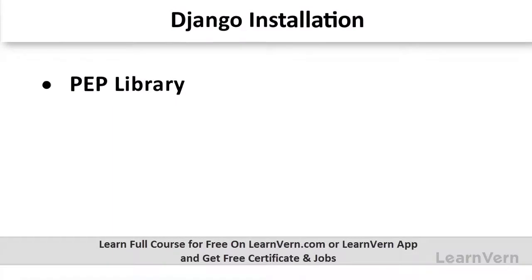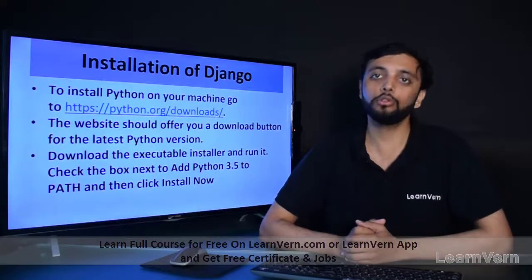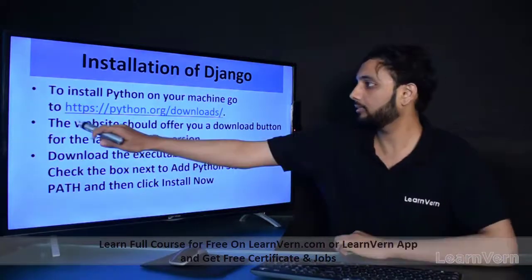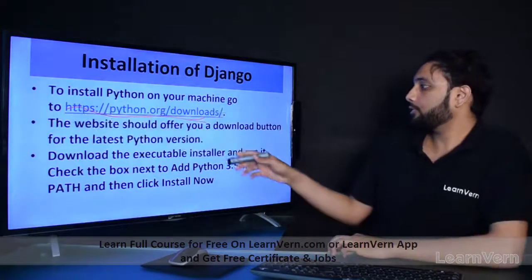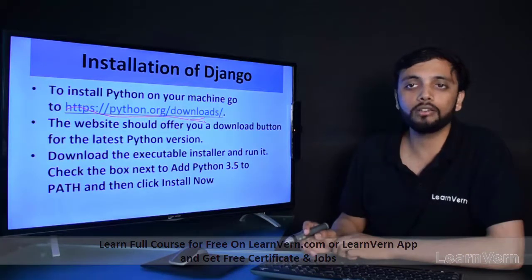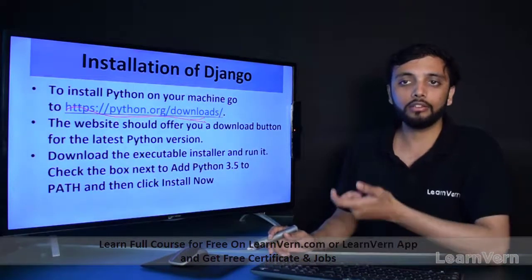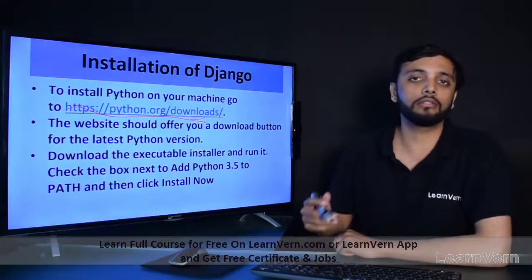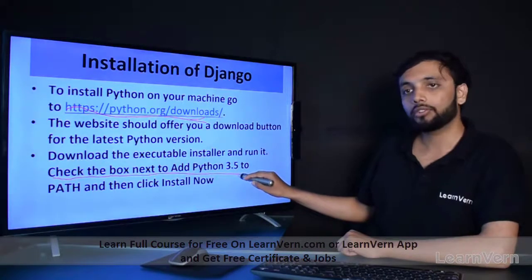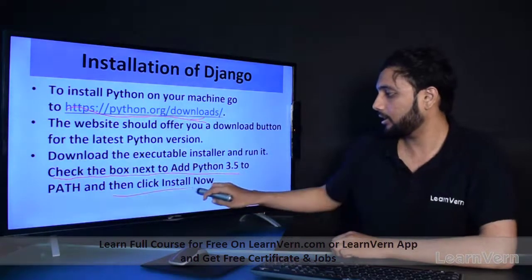First of all, to install Django we have to install Python, the pip library, virtual environment, and then Django. So first we'll install Python. We can install Python from its official website. Go to the website and download the software — it should offer you a download button for the latest Python version. We have used Python 2.7, so you can download 2.7 or the latest version. When you download, click install, and make sure to check the box next to 'Add Python 3.5' or whichever version you downloaded, then click 'Install Now'.